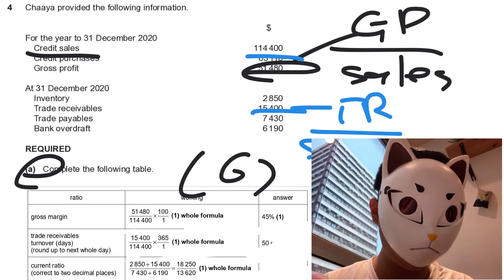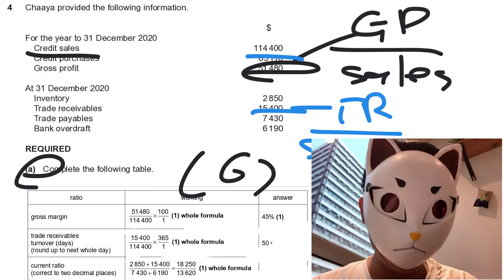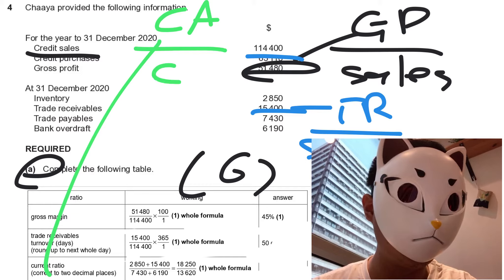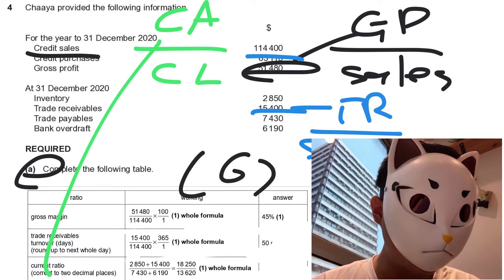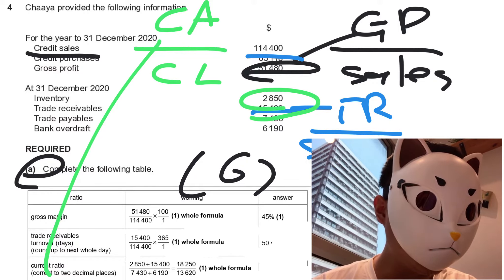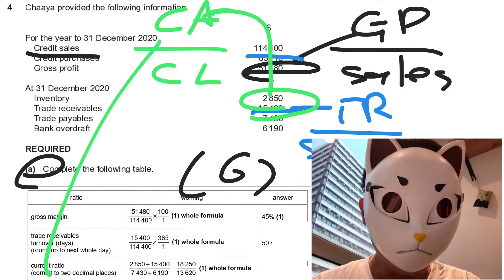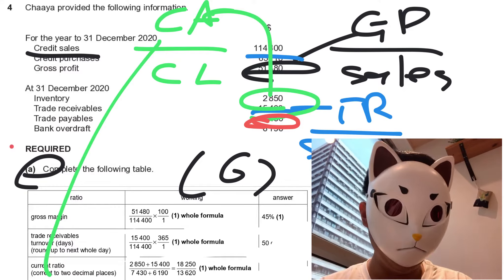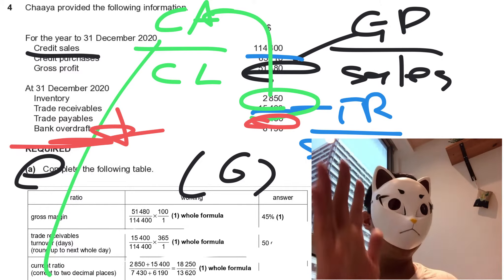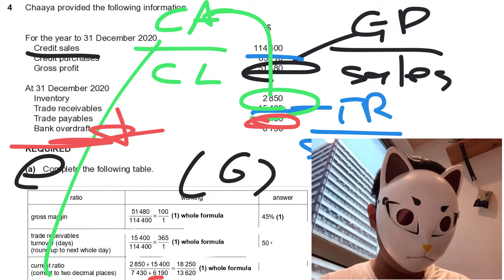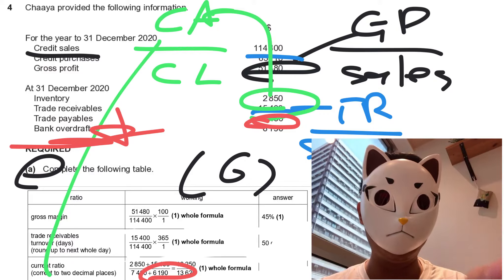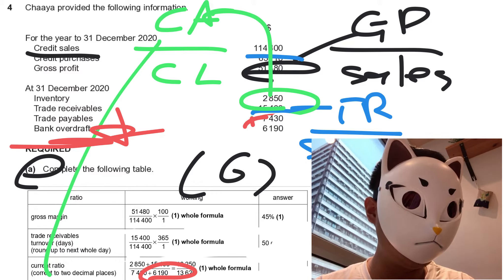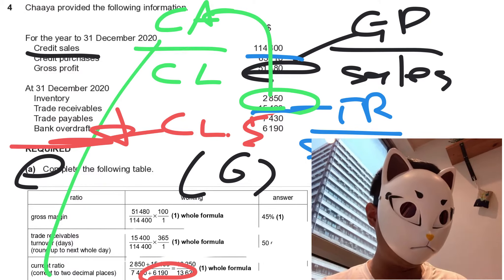For the current ratio, the formula is current assets over current liabilities. For current assets, we use these two items. For current liabilities, trade payables are included. Be careful: some students regard bank overdraft as a current asset — no, bank overdraft is a current liability. So both trade payables and bank overdraft are current liabilities.